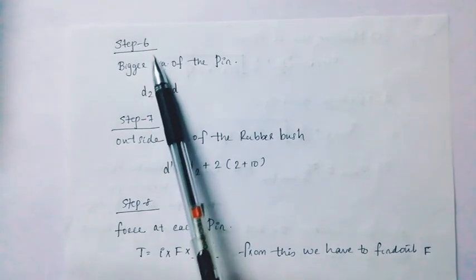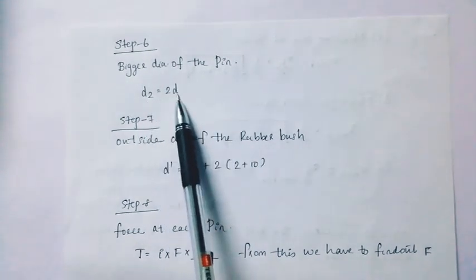Step 6: Bigger diameter of the pin. D2 equal to 2D.